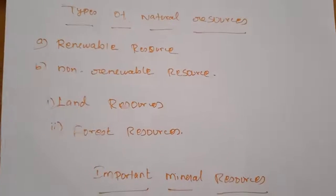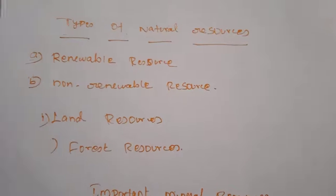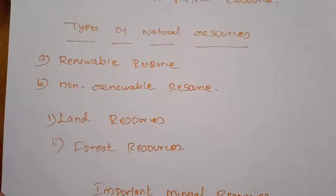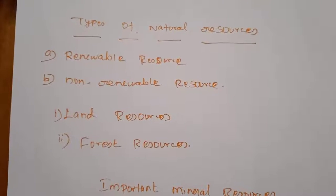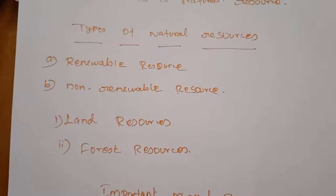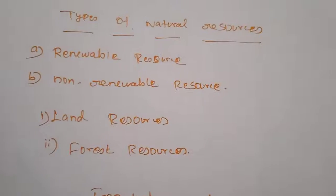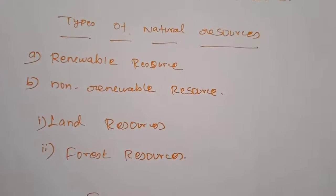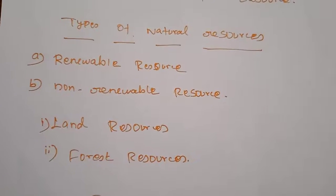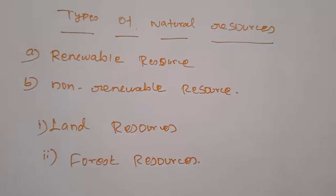The types of natural resources: we can classify natural resources into two types. The first is renewable resources — those that can be regenerated within a given space of time. For example, forest, wildlife, wind, biomass, tidal, and hydro energies. These types of resources are regenerated within a particular time. The second is non-renewable resources — those that cannot be regenerated. For example, fossil fuels, coal, petroleum, and minerals. Once extracted from nature and used, they cannot be regenerated.